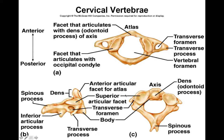The cervical vertebrae have a few differences. One of the differences is they have foramina through their transverse processes. These transverse foramina are places where spinal nerves can exit and enter the cervical vertebrae.